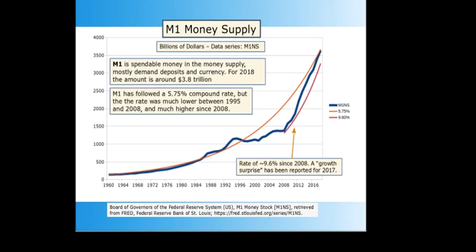The M1 money supply: M1 includes money that is readily accessible for spending. It consists of currency, traveler's checks, demand deposits, and other checkable deposits such as draft accounts. The largest part of M1 is demand deposits. M1 has roughly followed a 5.75% compound interest curve. The growth rate fell well below this level in the 1990s until the 2008 financial crisis. After 2008, M1 roughly followed a 9.6% rate of increase, probably part of the bank bailout and quantitative easing programs. More recently, M1 moved back up to the 5.75% compound interest curve. At the end of 2017, M1 was around $3.5 trillion.